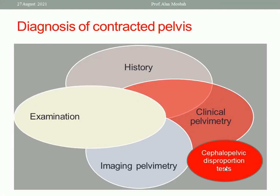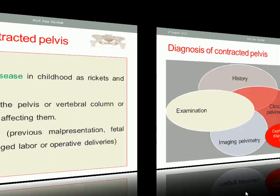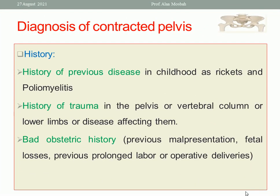Contracted pelvis is diagnosed from history, examination, clinical pelvimetry, imaging pelvimetry, and cephalopelvic disproportion tests. From history, ask about previous diseases in childhood like poliomyelitis or rickets, or trauma to the pelvis, vertebral column, or lower limbs. Ask about any motor car accidents in childhood or adulthood. Also enquire about bad obstetric history: previous prolonged labor, previous malpresentation, previous fetal loss, and previous operative delivery.